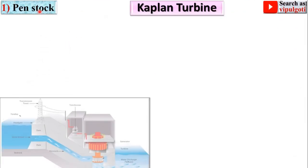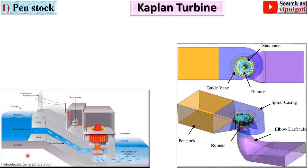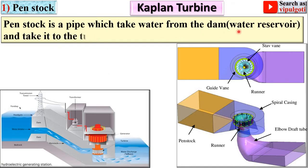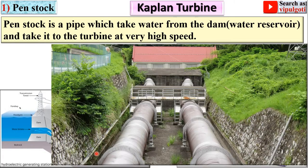First, the penstock. This is the penstock in the hydropower plant. The penstock is a pipe which takes water from the dam — that means the water reservoir — and delivers it to the turbine at very high speed.